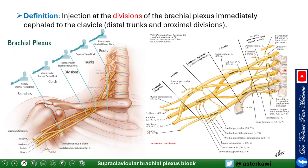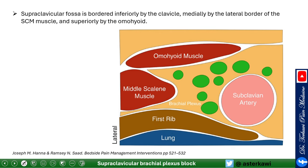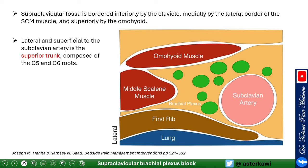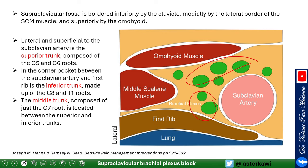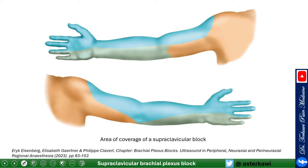The supraclavicular brachial plexus block is an injection at the divisions of the brachial plexus, immediately cephalad to the clavicle — at the distal trunk and proximal division level. The supraclavicular fossa is bordered inferiorly by the clavicle, medially by the lateral border of the sternocleidomastoid, and superiorly by the omohyoid. The superior trunk with C5/C6 is lateral and superficial to the subclavian artery. The inferior trunk containing C8/T1 is in the corner pocket deep to the artery, and the middle trunk (C7) is in the middle. This is the classic coverage area of the supraclavicular block.